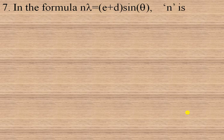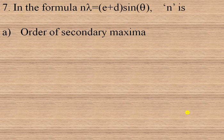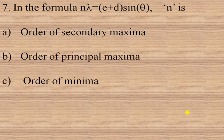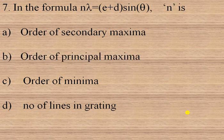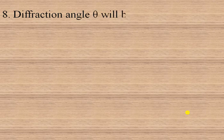The next question is: in the formula nλ = (E + D)sinθ, small n is — order of secondary maxima, order of principal maxima, order of minima, or number of lines in grating? Here small n is the order of principal maxima. So option B is the right option.